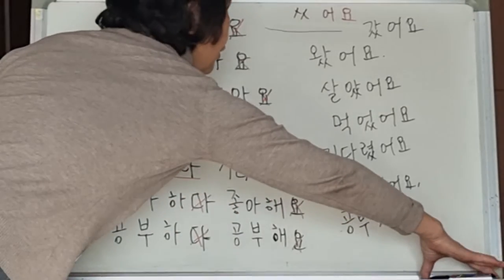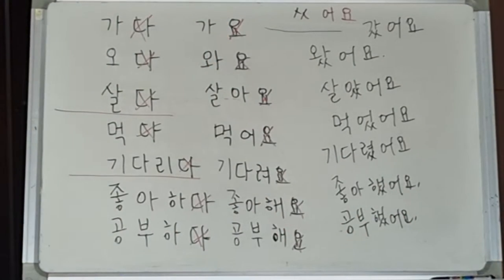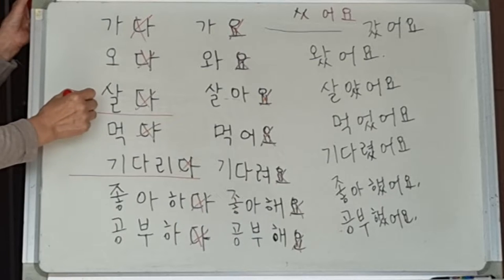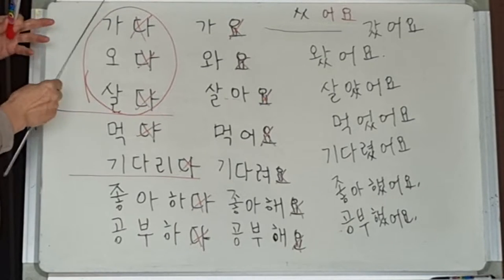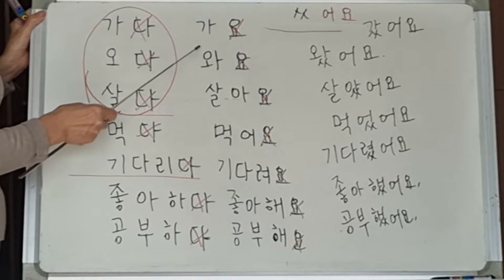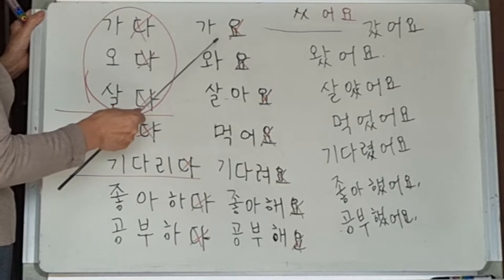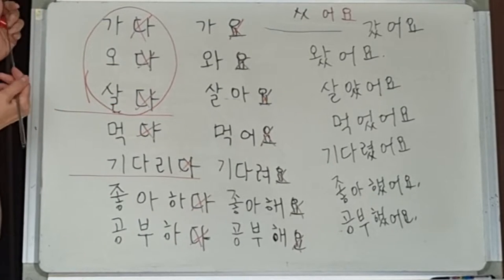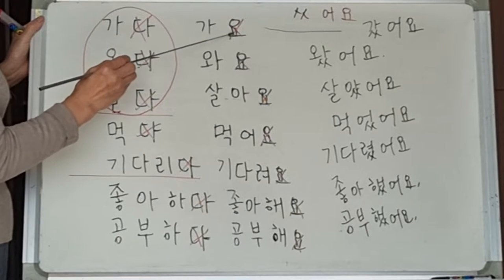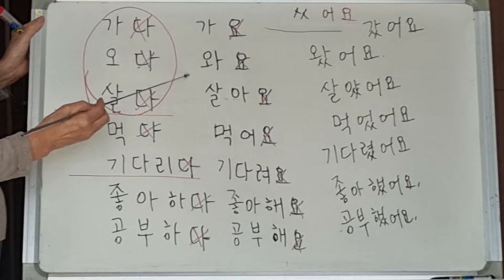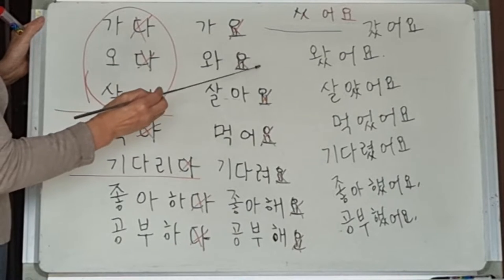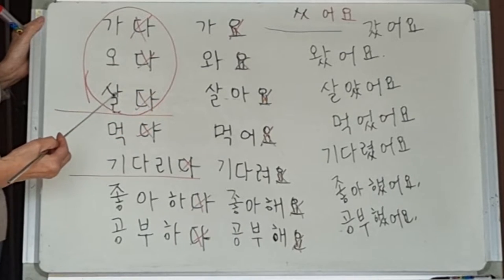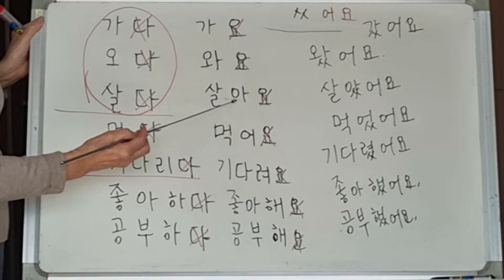there are three ways to make the present tense. The first category takes the verb stem — that is, the verb without 다 — and adds 아요. For example: 가 + 아요. Since 아 appears twice, we omit one, giving us 가요. And 오 + 아요 contracts to 와요.